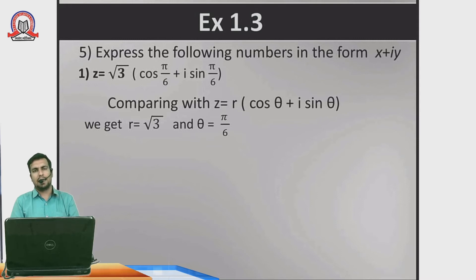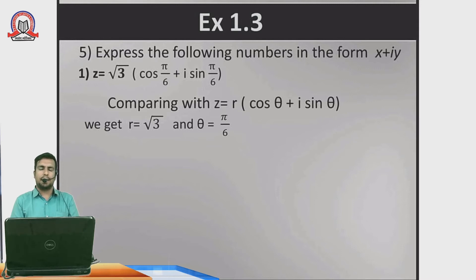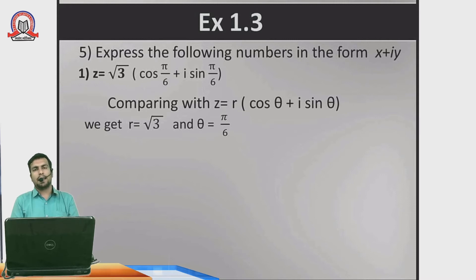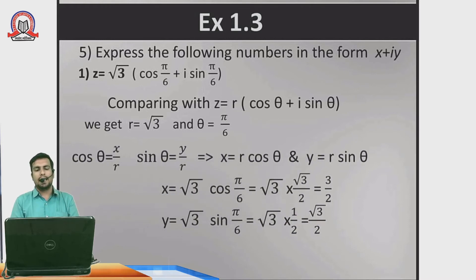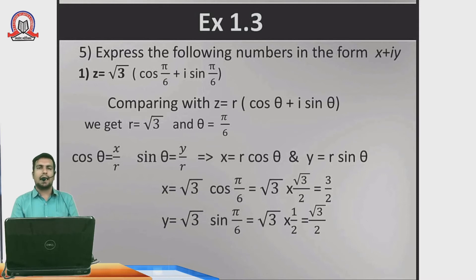With θ = π/6 (i.e., 30°), we use the formulas derived from cosθ = x/r and sinθ = y/r to get x = r cosθ and y = r sinθ. So x = √3 · cos(π/6) and y = √3 · sin(π/6). These are the target formulas to extract x and y directly from r and θ.